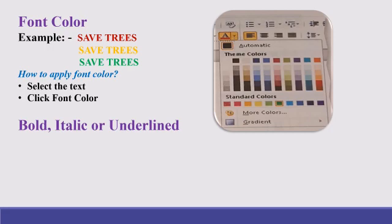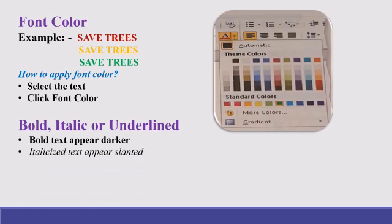Bold, italic, or underline. Bold option present in Home tab makes the text appear darker than the normal. Italic option makes the text appear slanted than the normal. And underline option underlines a line below it.